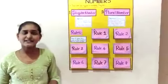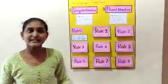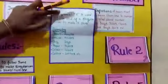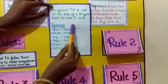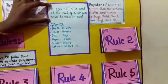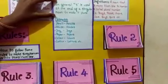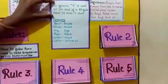We have to follow some rules while we are changing singular number into plural number. So let's see some rules. First rule: in general, S is used at the end of a singular noun to make it plural. Examples: pencil-pencils, house-houses, dog-dogs, paper-papers, color-colors, letter-letters, etc.